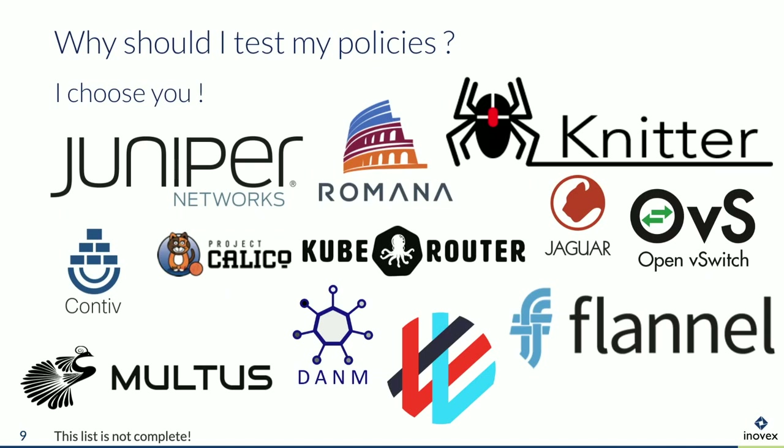Here's just a small excerpt from the official network plugins page in the Kubernetes documentation — and these are not all plugins, just the ones with a logo. There are quite many. They all work a little differently: some use IPtables, some use IPset, some use eBPF like Cilium, some use NFtables, and some do other stuff. It's pretty interesting to see how these things are solved.